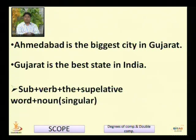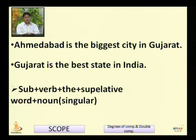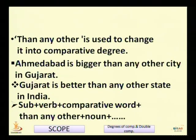The striking difference is in the noun: when we have the definite article 'the' and a superlative word, the singular form of the noun is used; when we have 'one of the,' we use the plural form of the noun. For example, 'Ahmedabad is the biggest city in Gujarat' — 'city' is in singular form. To change into comparative degree, 'than any other' is used: 'Ahmedabad is bigger than any other city in Gujarat.'